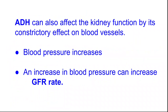ADH can also affect kidney function through its constrictory effect on blood vessels — meaning it can constrict the blood vessels. So the diameter decreases, blood pressure increases, and due to the increase in blood pressure, glomerular blood flow increases, which leads to an increase in the glomerular filtration rate. Therefore, as blood pressure increases, glomerular filtration rate increases, and the urine formed will be high.